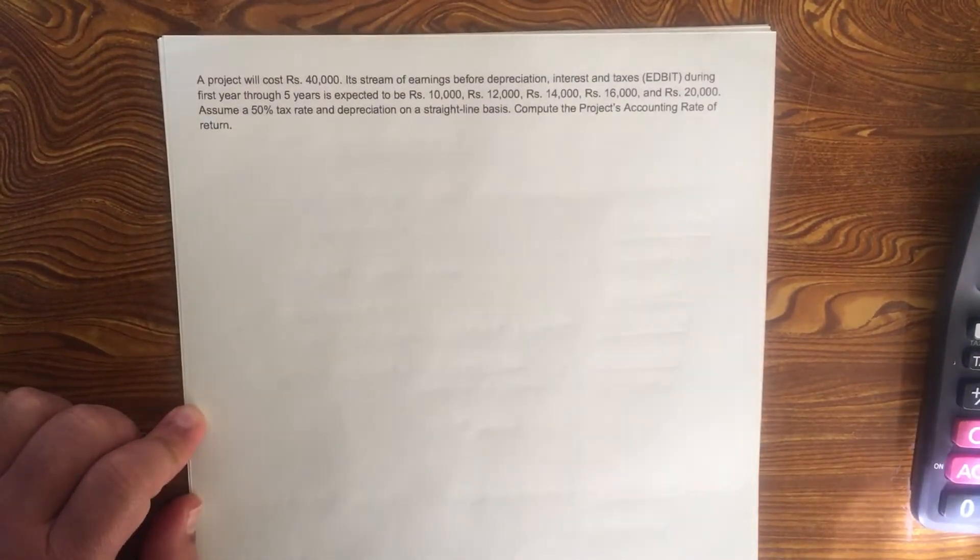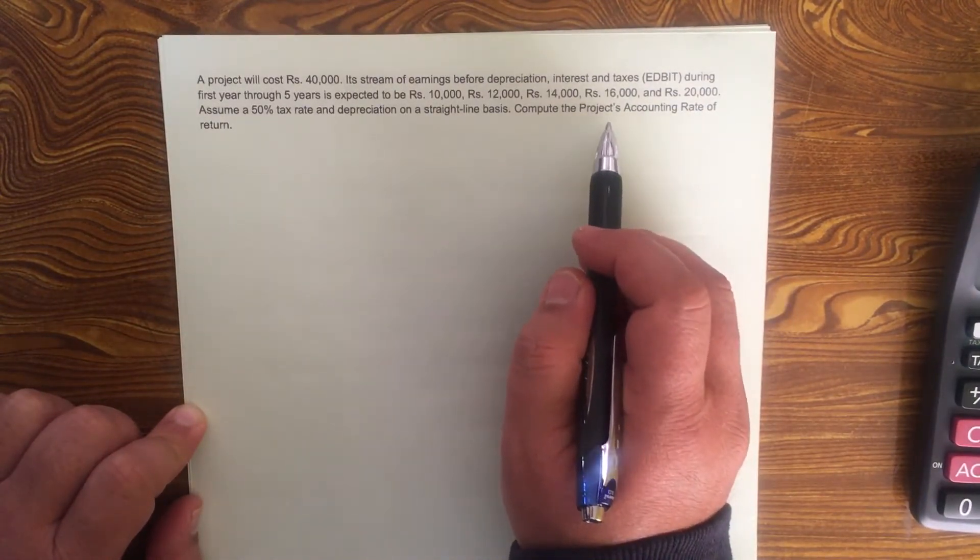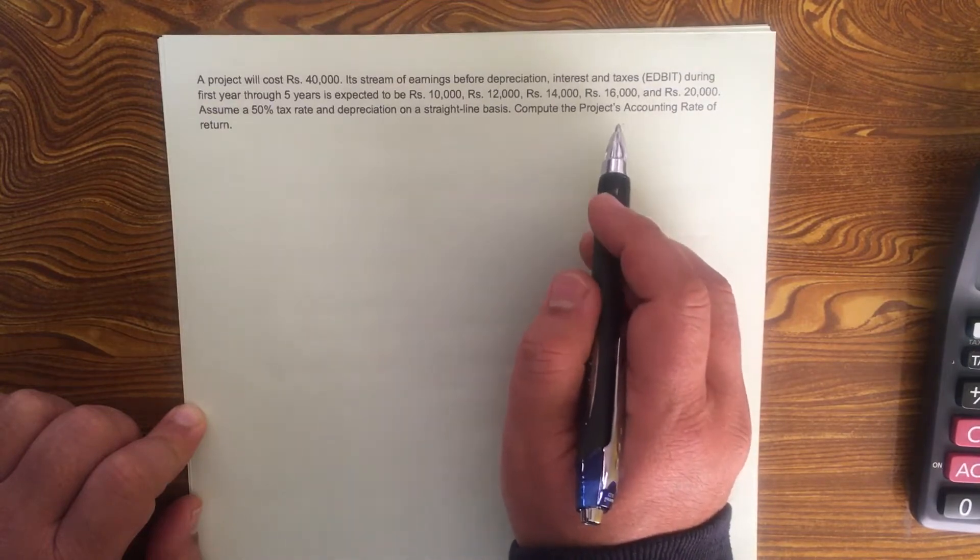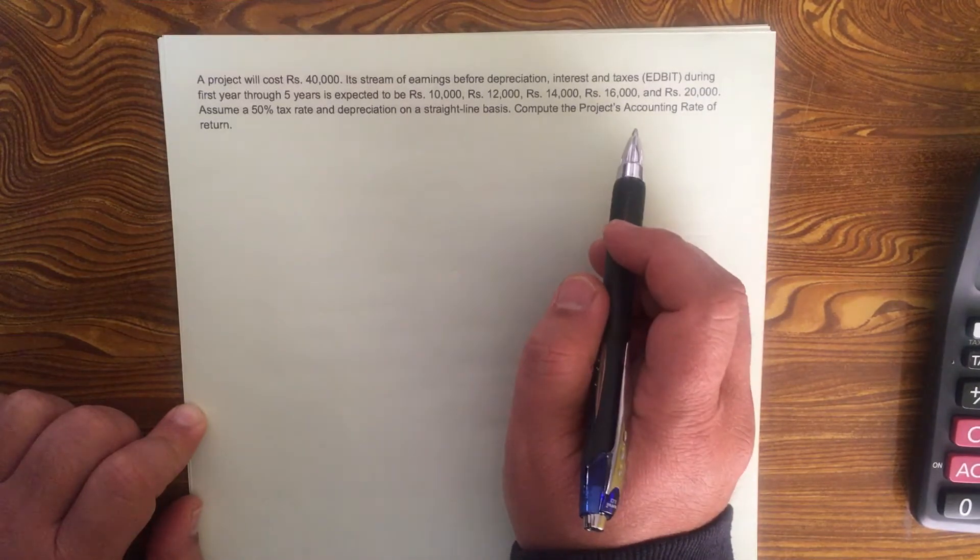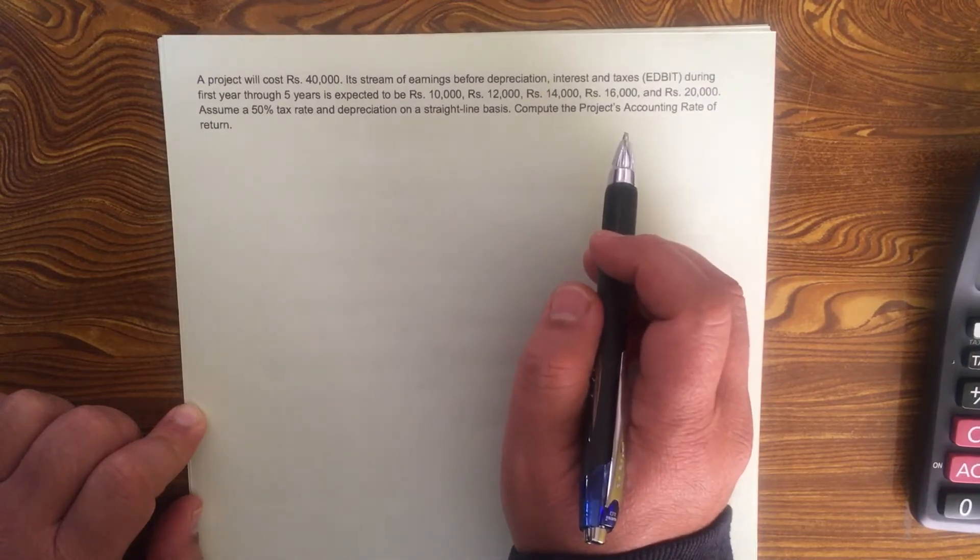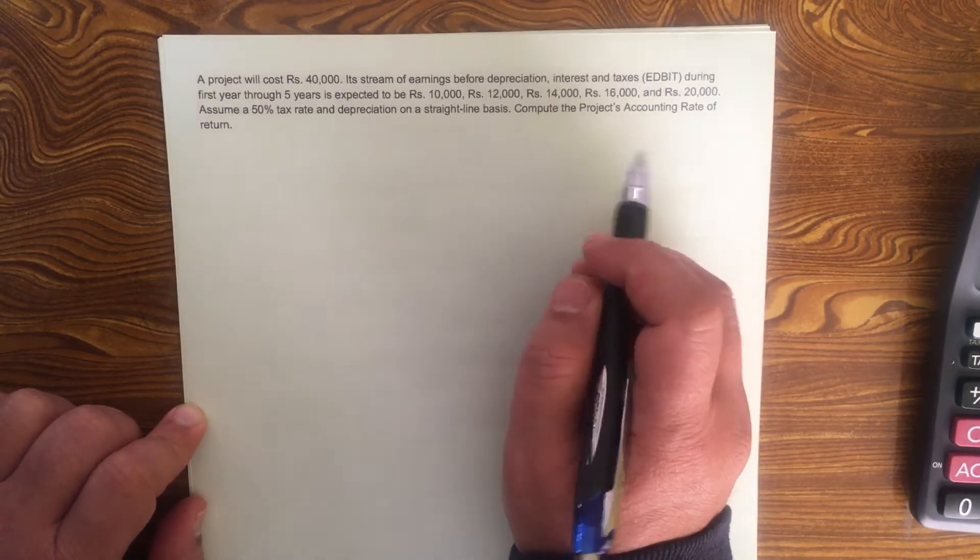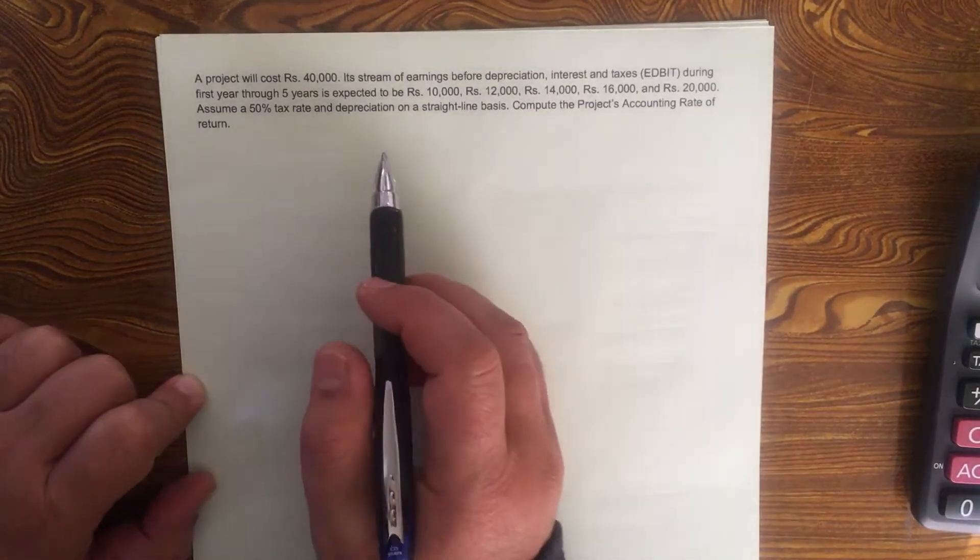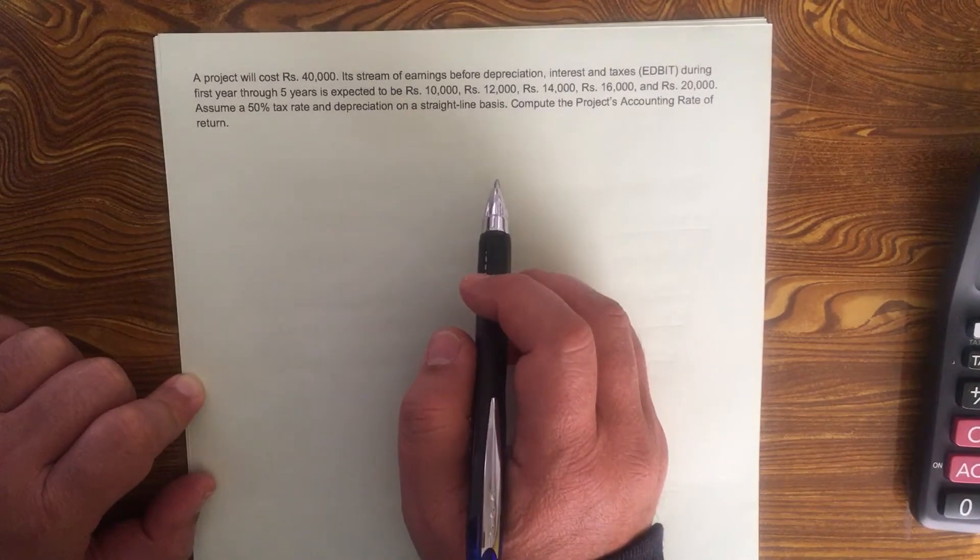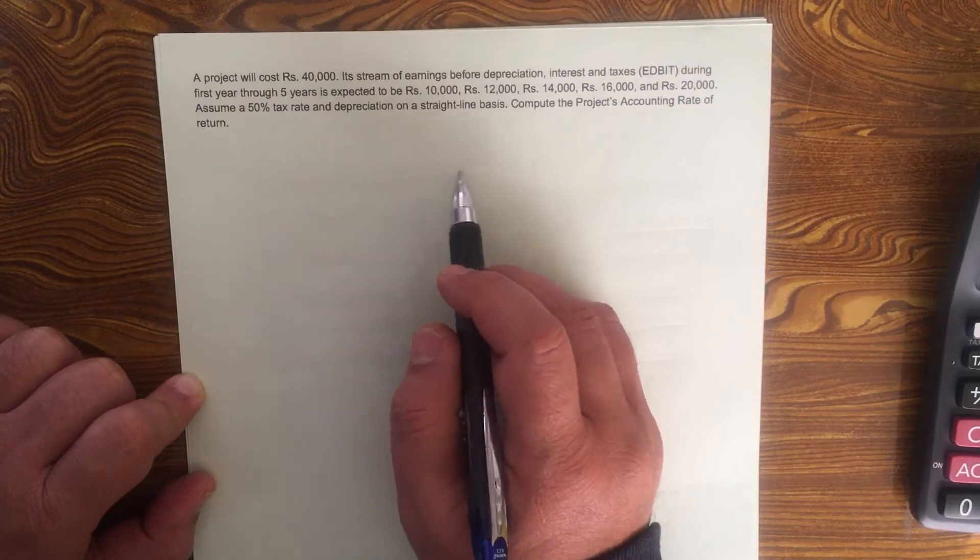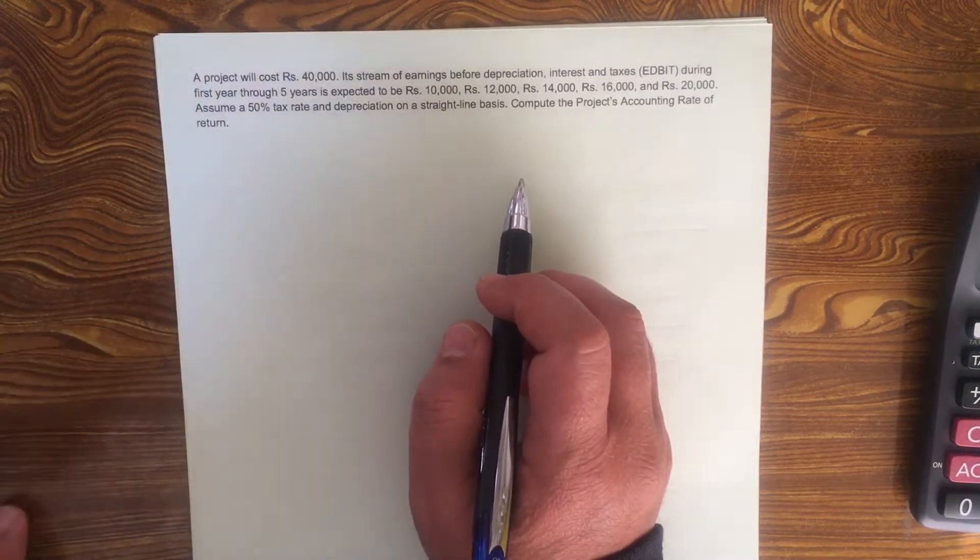Welcome back. Let's solve a capital budgeting problem using the appraisal technique called ARR, accounting rate of return or average rate of return. This ARR is a non-discounted cash flow method used for appraising projects under capital budgeting. Unlike payback period, we are not going to calculate the net cash inflow, the CFAT. Instead, we will calculate the accounting profits, the net earnings or the net profit. Now let's look at this problem.